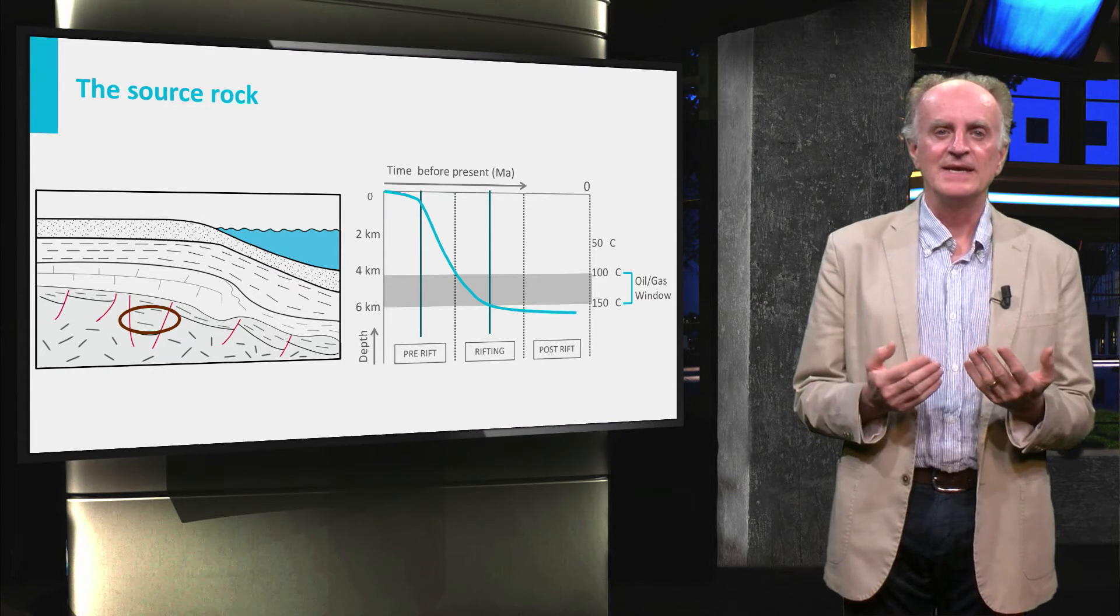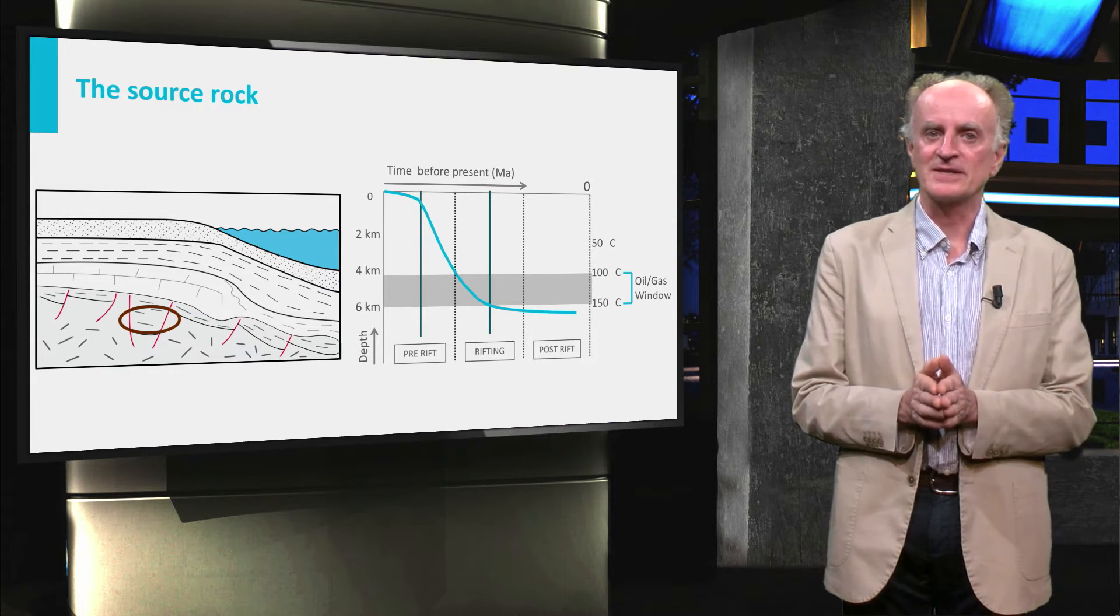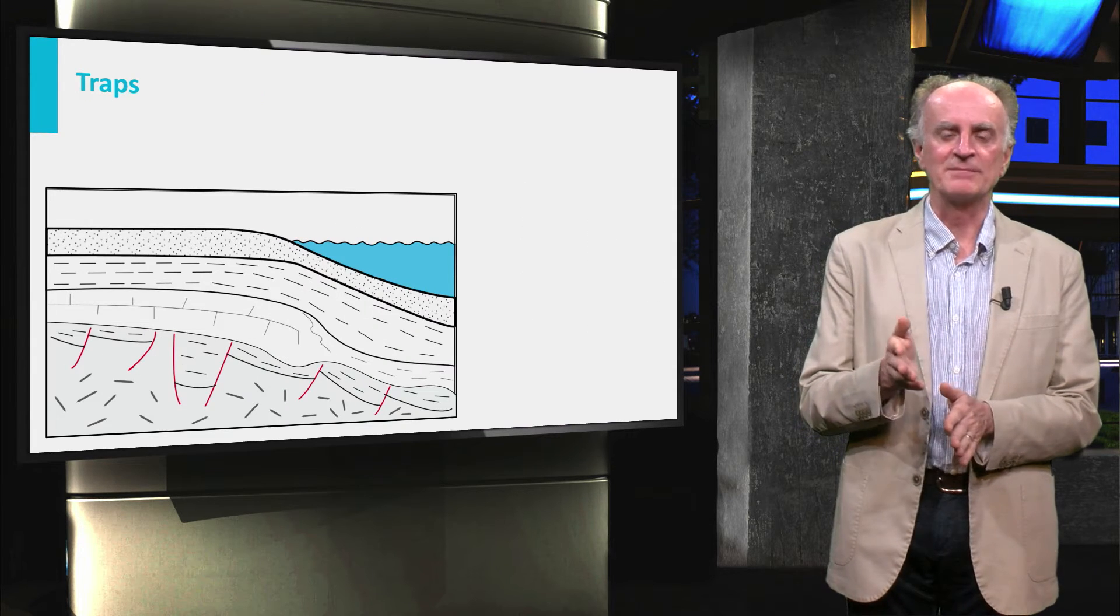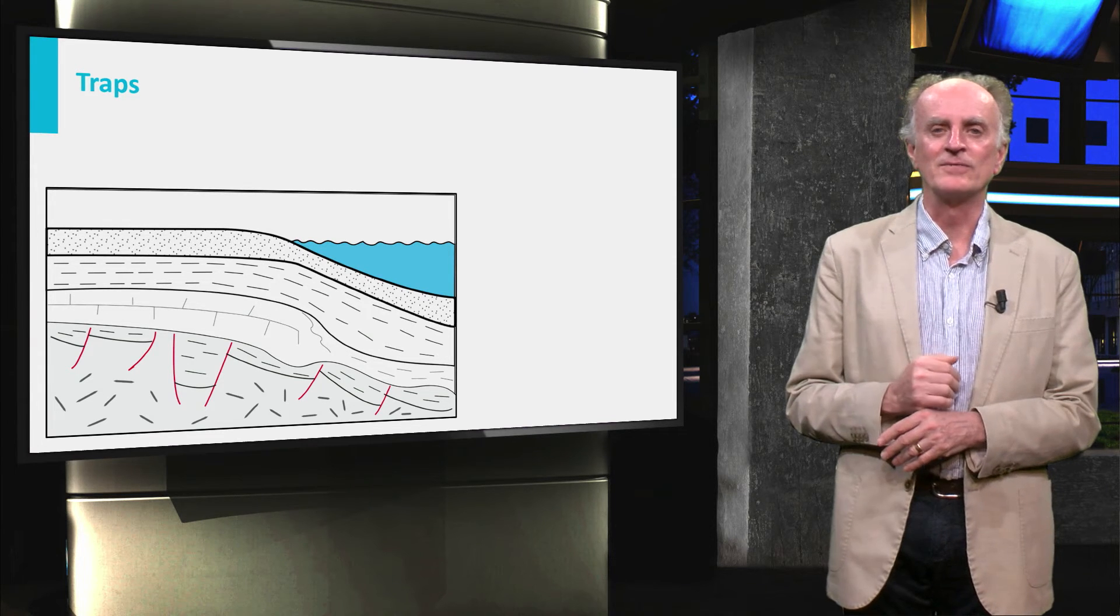As we have seen, it is of crucial importance to determine if, when petroleum generation started, the traps were already in place or not. The hydrocarbons will start migrating upward along the tilted beds overlying listric faults and or along faults.